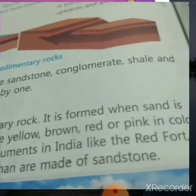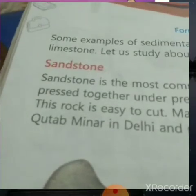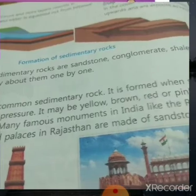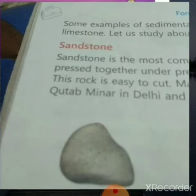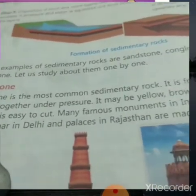Sandstone may be yellow, brown, red, or pink in color. This rock is easy to cut. Many famous monuments in India like the Red Fort and the Qutub Minar, and palaces in Rajasthan, are made of sandstone.